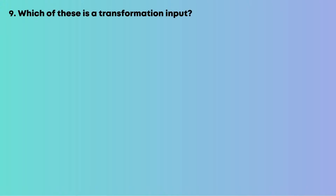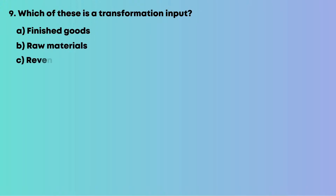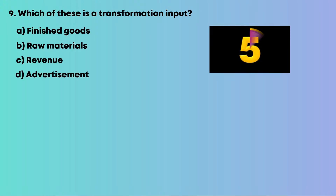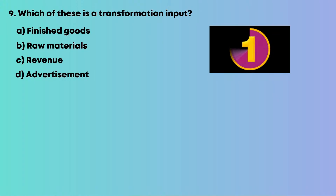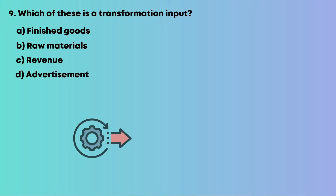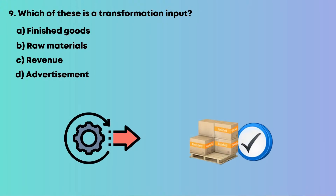Question 9: Which of these is a transformation input? Options are: A, finished goods; B, raw materials; C, revenue; D, advertisement. They are transformed into outputs during production. So the answer is B, raw materials.